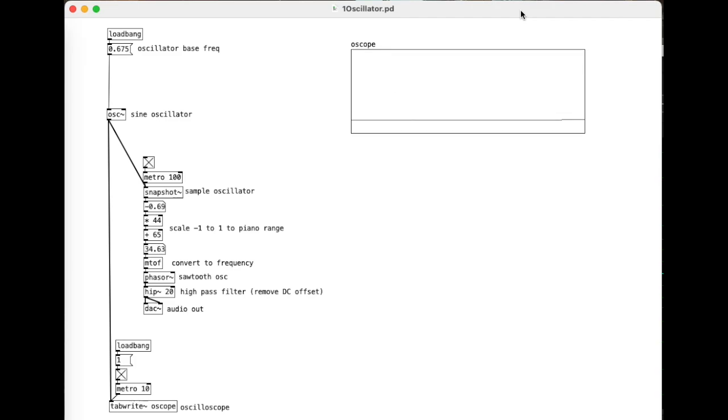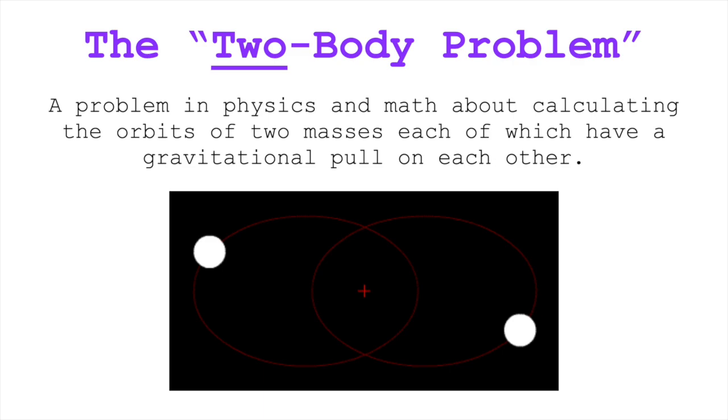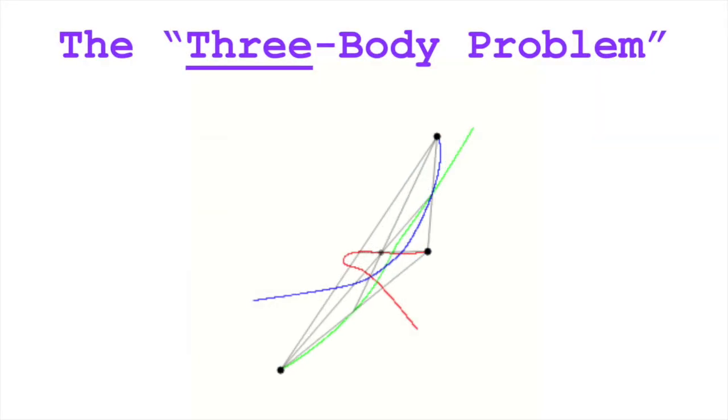So first, the two-body problem in physics. Just in simplest terms, it's about calculating the orbits of two masses, each of which are going to have a gravitational pull on each other. Again, I'm simplifying here, but the idea here is that the interdependence of these two bodies is going to be complex since they're each pulling on each other, but with some calculation this motion can be predicted.